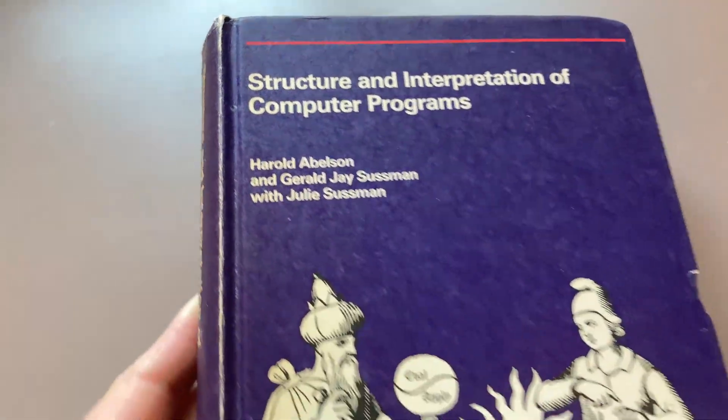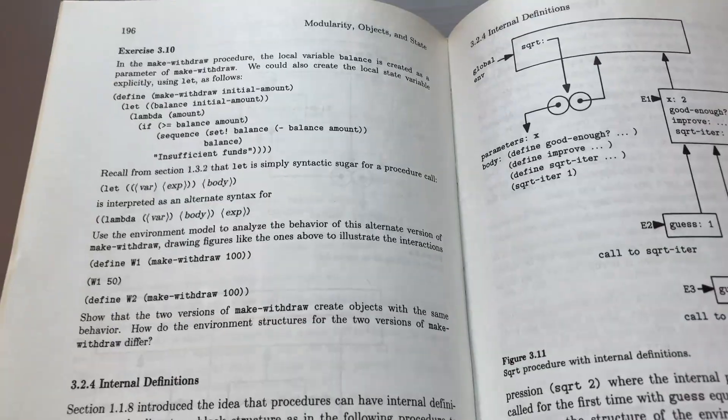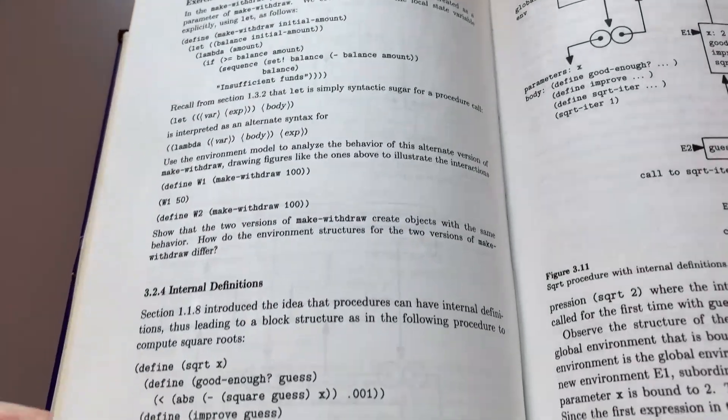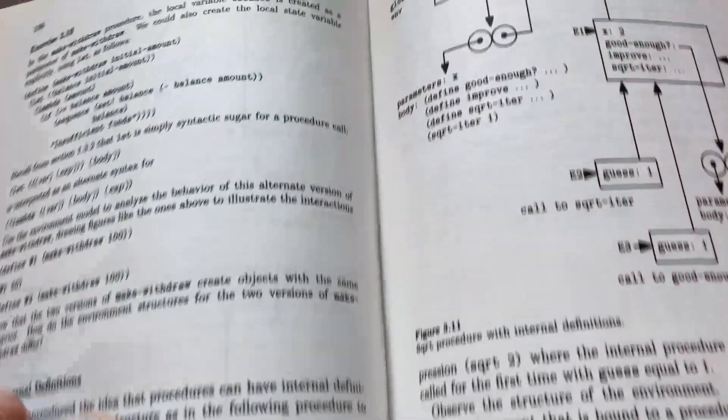It's just really fun to see how computer science was taught in the 80s. This book uses Scheme which is a dialect of Lisp to explain all of the concepts. And I just got to give it a whiff.